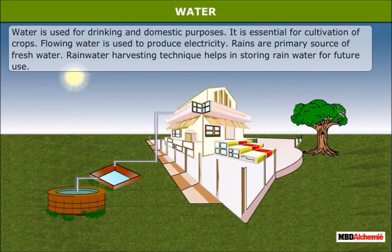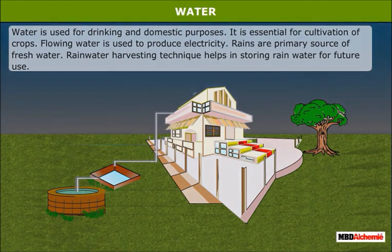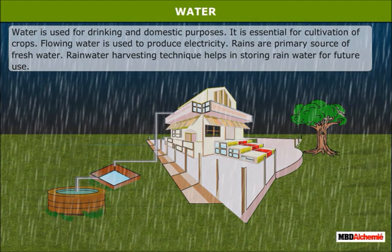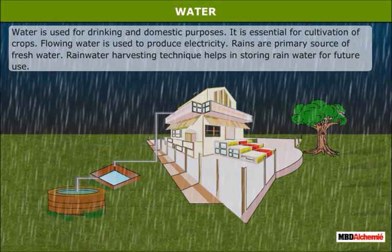Water is used for drinking and domestic purposes. It is essential for cultivation of crops, and flowing water is used to produce electricity. Rain is the primary source of fresh water, and rainwater harvesting techniques help in storing rainwater for future use.